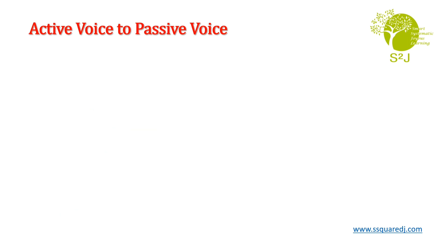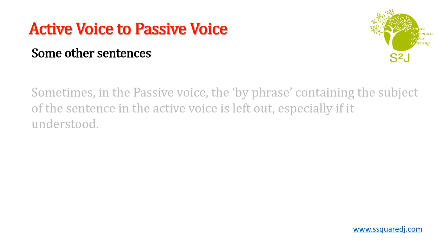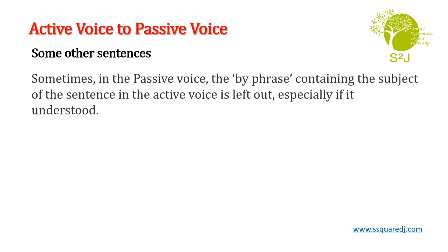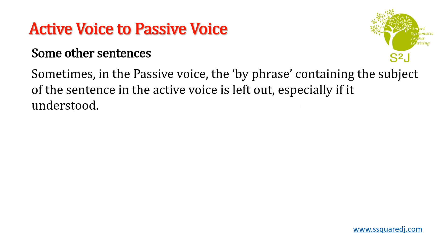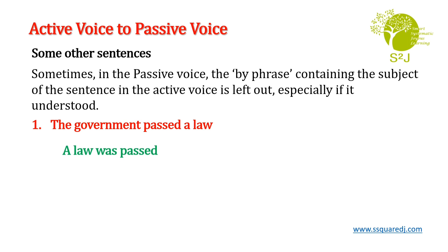Now let us move ahead and see some more sentences. Sometimes in the passive voice, the 'by phrase' containing the subject of the active voice sentence is left out, especially if it is understood — if it is not necessary to state by whom the action was done. Like this example: 'The government passed a law.' → 'A law was passed.' There is no need to write 'by the government' because it is understood.